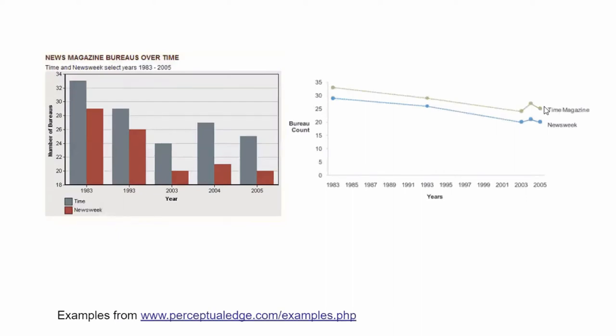So right here, we can see the same data set. This is news magazine bureaus over time. We can see that we're comparing Times Magazine and Newsweek. But these two are completely different charts. On the left, we see the bar chart. And on the right, we see a line chart. So if we're looking on the graph on the left, on the bar chart, we can maybe tell a story of how Times Magazine was more successful than Newsweek all throughout the years. And you could see that the market share of the Time Magazine is a lot bigger in 2004 and 2005.